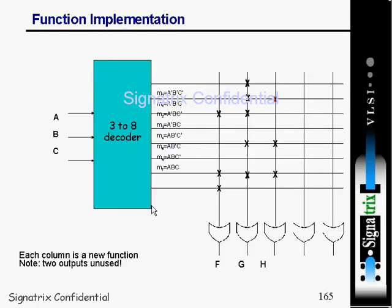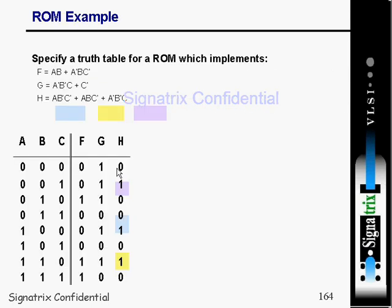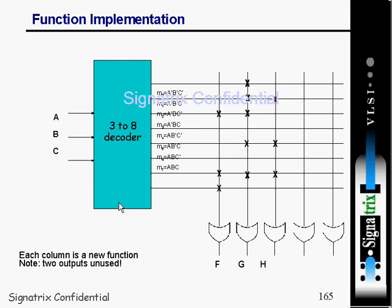You implement those functions using a three-to-eight decoder, passing the information and programming the connections at the suitable points. The function implementation column shows the new function. Note that two outputs are unused — we are not using those two outputs.